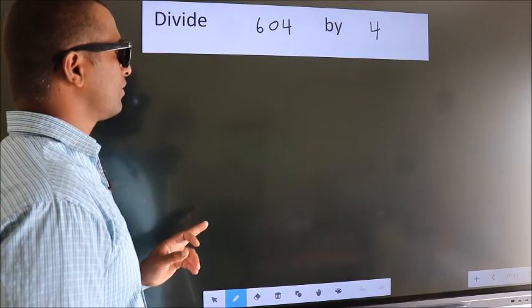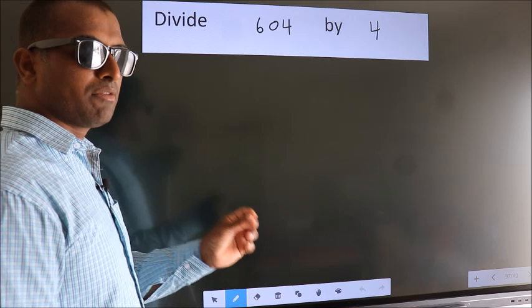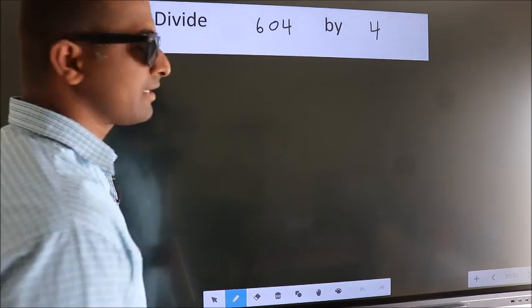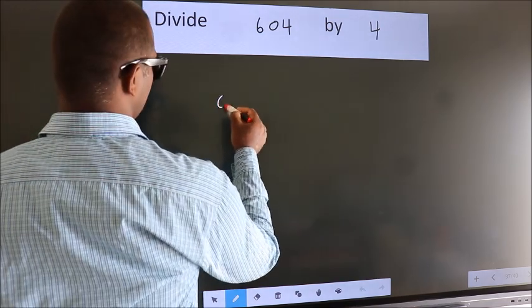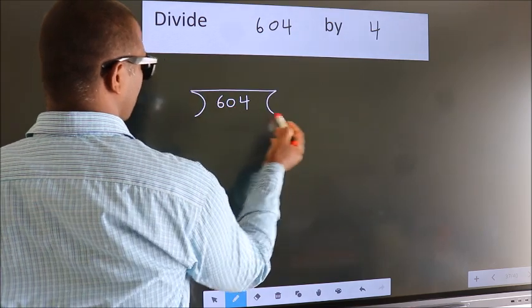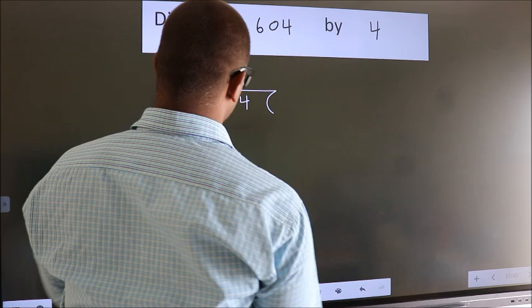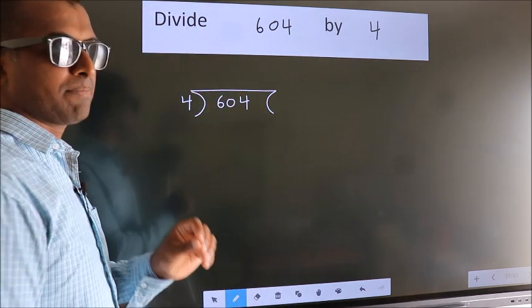Divide 604 by 4. To do this division, we should frame it in this way. 604 here, 4 here. This is your step 1.